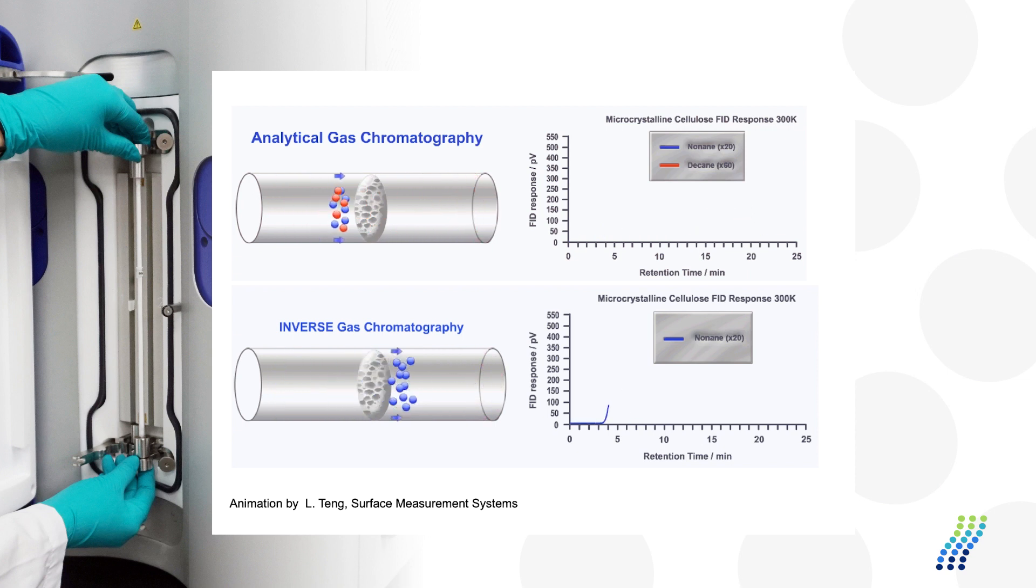So we still use retention time as the fundamental measurement. But now we're going to see as this retention time changes with respect to temperature, flow rate, humidity, and or the molecular size and or chemistry of the probe molecule. We can then use that to back calculate physical chemical properties about the surface.